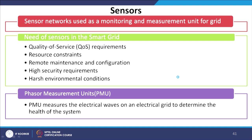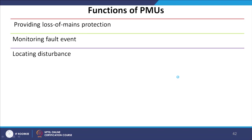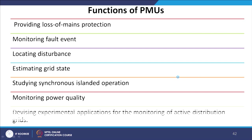One more important point: we need Phasor Measurement Units, known as PMUs. PMUs mainly measure the electrical waves of an electrical grid to determine the health of the system. The major functions of PMUs include providing loss-of-main protection, monitoring fault events, locating disturbances, estimating grid state, starting synchronous islanded operation, monitoring power quality, and devising experimental setups for monitoring active distribution grids.